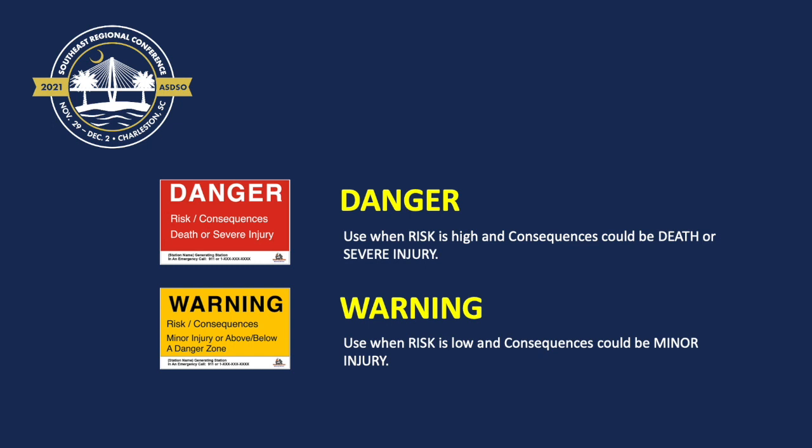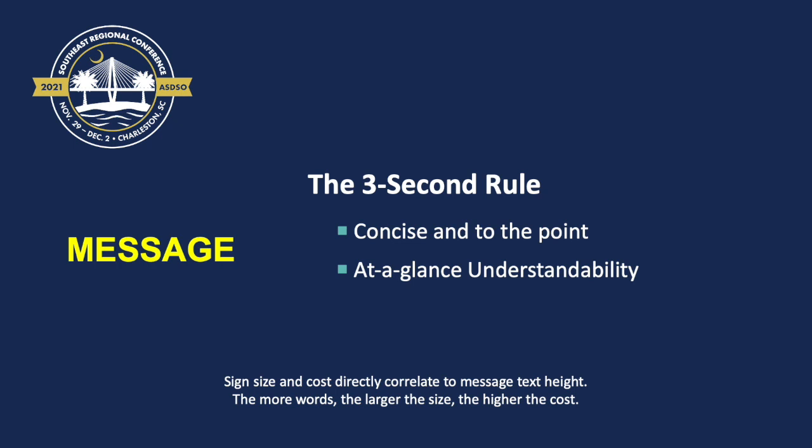Now we want to look at the message. My suggestion is to apply the three-second rule: you want your signs to be concise and to the point, with at-a-glance understandability. There's another reason for this too — the more words you have on a sign, the larger it needs to be, which means higher costs. So: three-second rule, concise, at-a-glance understandability. Your message text on line one defines what the danger is; on line two, you state the action and/or inform about the consequences.